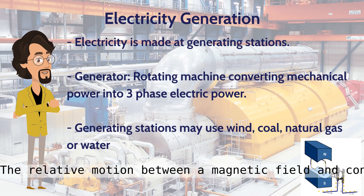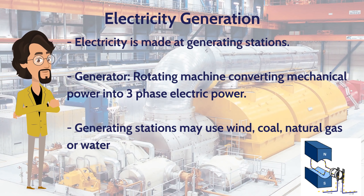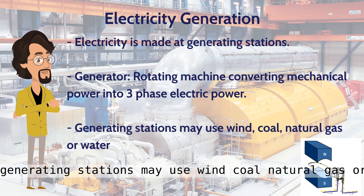The relative motion between a magnetic field and a conductor creates an electric current. Generating stations may use wind, coal, natural gas, or water.